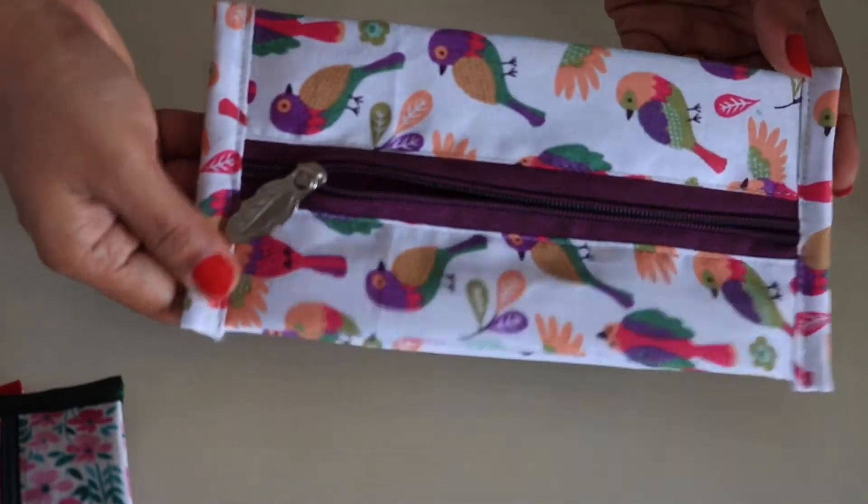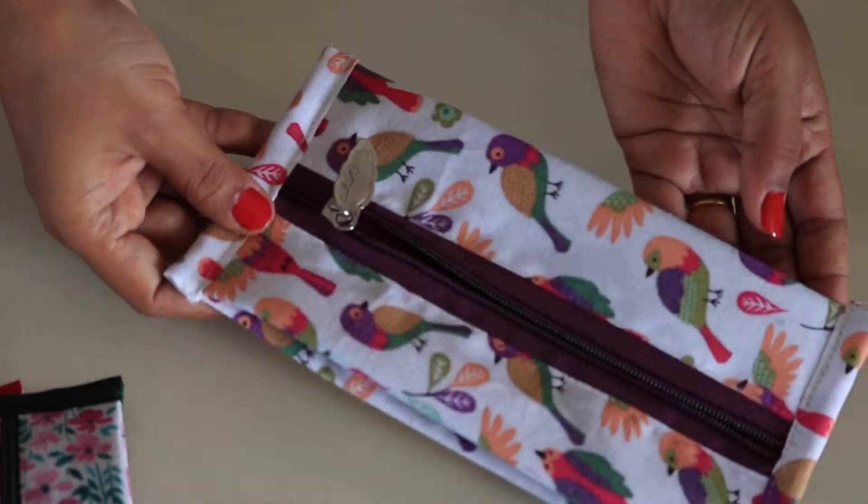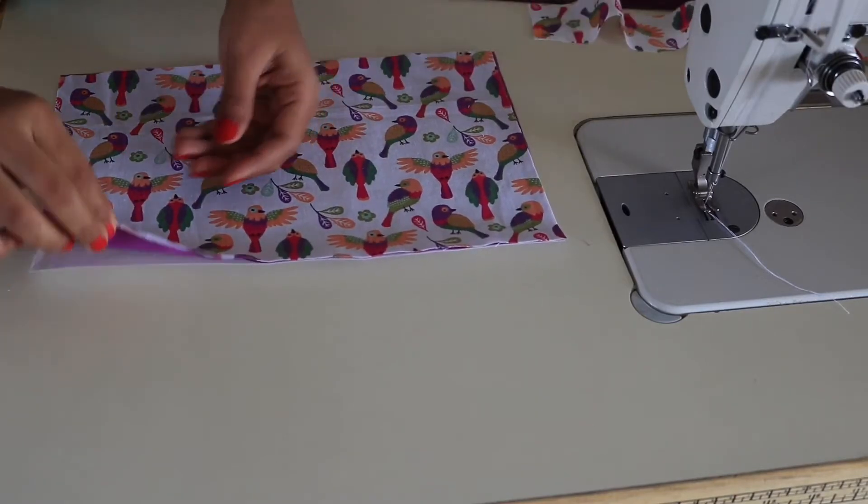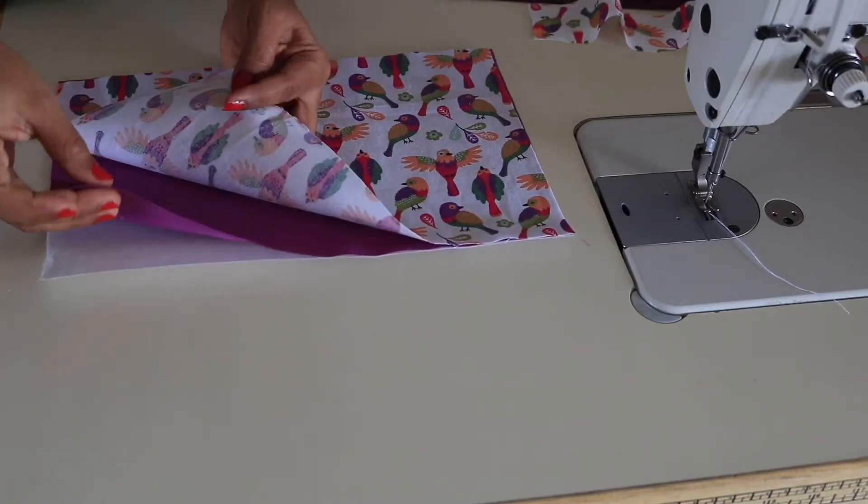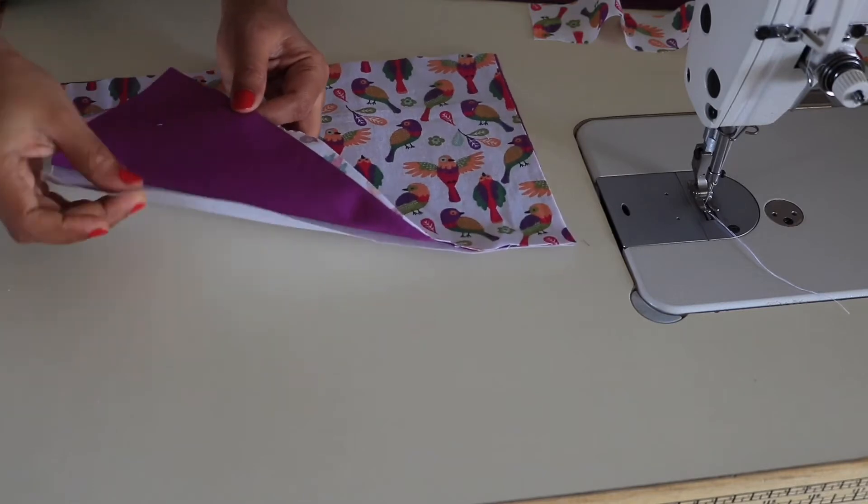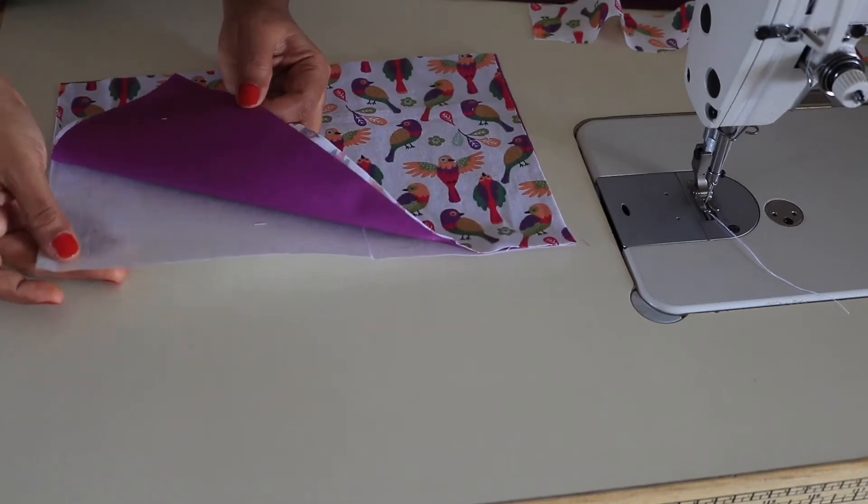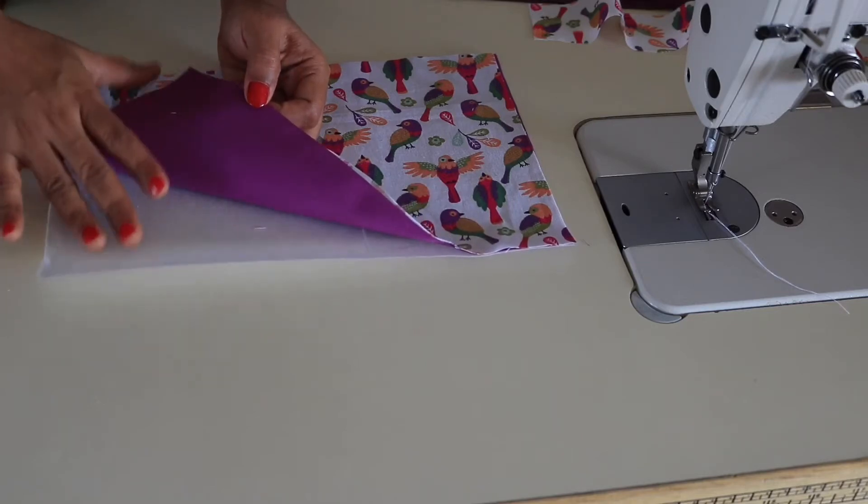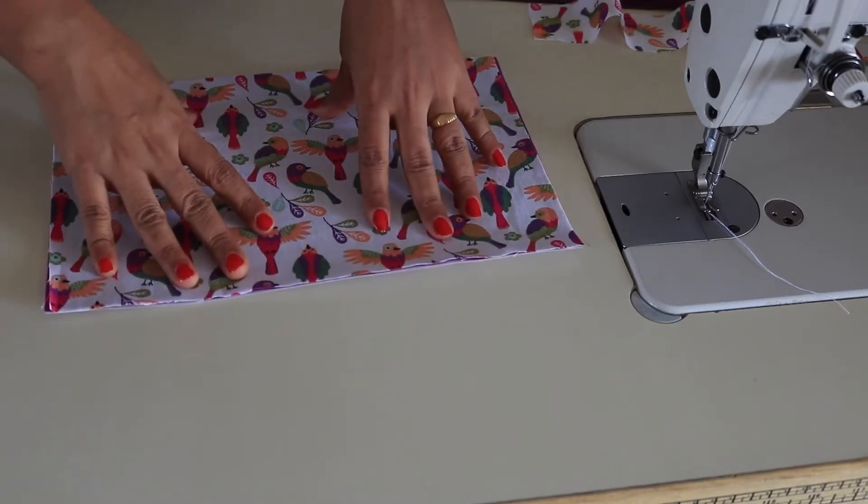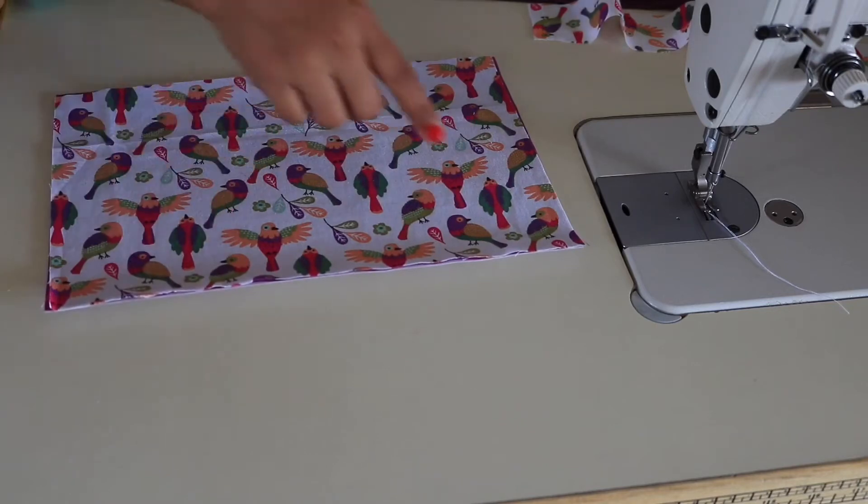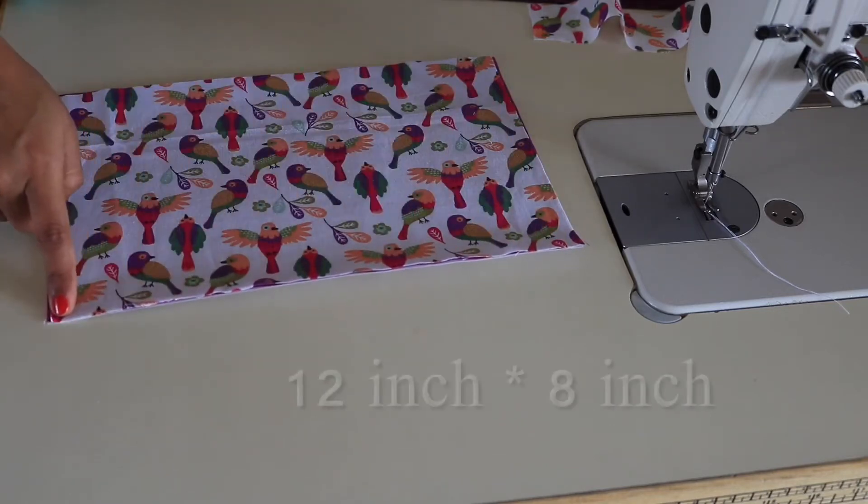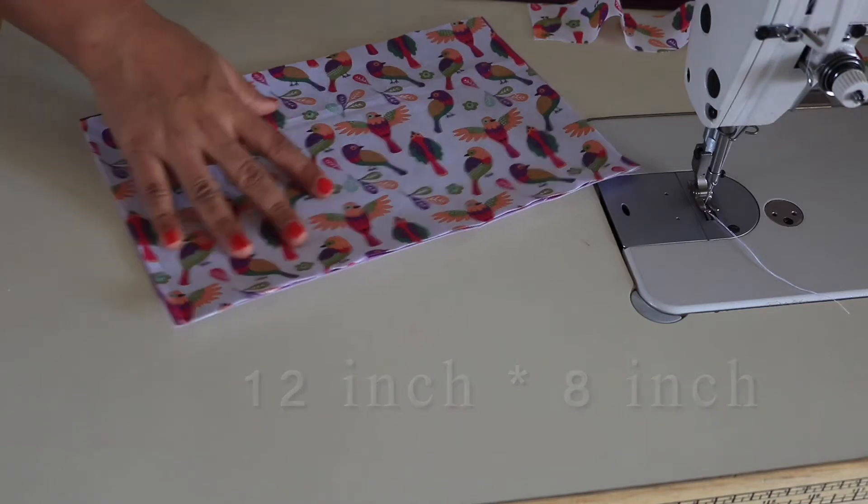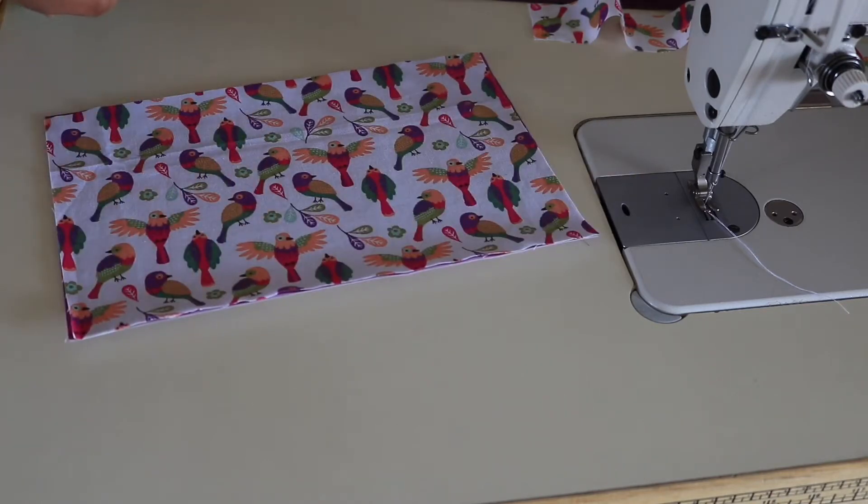So let's see what you will need to make this pouch. You are going to need one outer panel, one lining, and one lightweight fusible interfacing. Interfacing is optional. You can even make this pouch without interfacing.